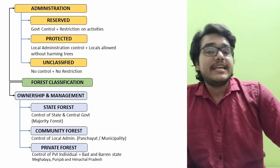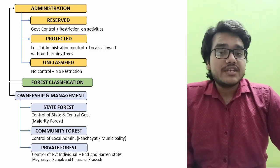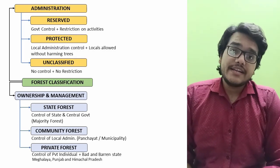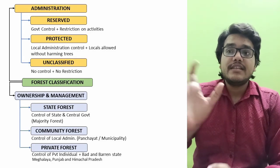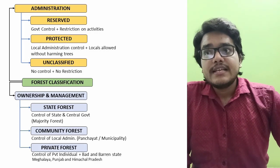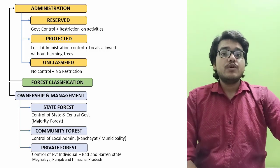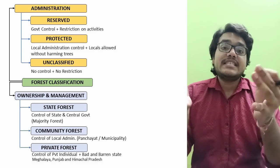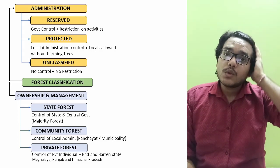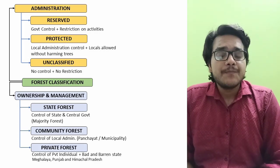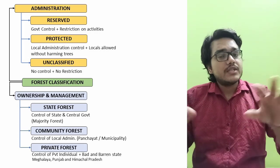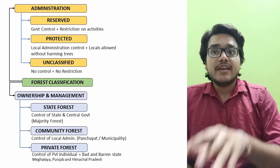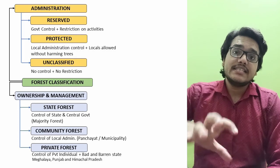On the basis of ownership and management, first is state forest. State means government — state forest's control and ownership belongs to the central and state government. More than the majority of forests in the entire country fall into this category. Second is communal forest, which is a smaller area like a village or district, controlled by local self-governance such as a village panchayat or district body.